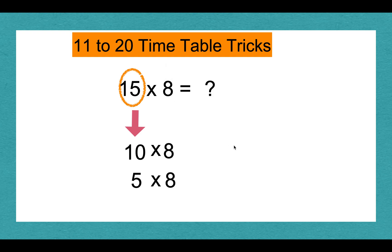10 times 8 equals 80. 5 times 8 equals 40. 80 plus 40 equals 120. 120 is our answer. 15 times 8 equals 120.